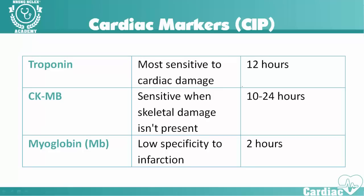When we have a patient suspected of having a heart attack, we're going to run what are called cardiac markers — also referred to as CIPs, cardiac injury profile. This is a set of labs to determine the extent or presence of cardiac damage. That's going to consist of troponin I and troponin T, CKMB, and myoglobin. Troponin is the most sensitive to cardiac damage; however, it takes about 12 hours to peak. CKMB is a little less sensitive and takes a bit longer than troponins. Myoglobin has very low specificity to infarction because it can indicate damage to muscles in general.